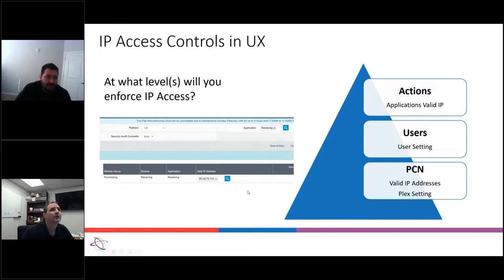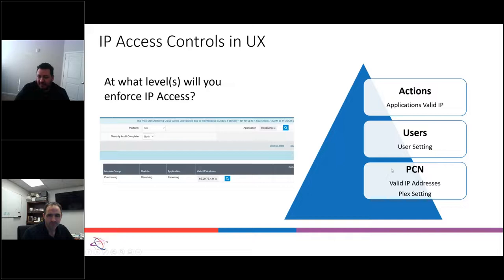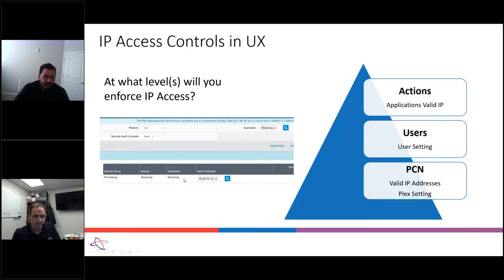Next: assigning IP access controls in UX. For every application you can assign an IP address. For example, maybe manager positions are fine working from home with the current circumstances, but you don't want anyone logging into control panel if they're not on your WiFi or your IP address. This is the way to do it — it's simple to choose one or several IP addresses by application, and the application is the equivalent of the screen. For example, you can assign an IP address to 'receiving,' or to shipping, cycle counting, or control panel — pretty much every application on the system can be linked like this.